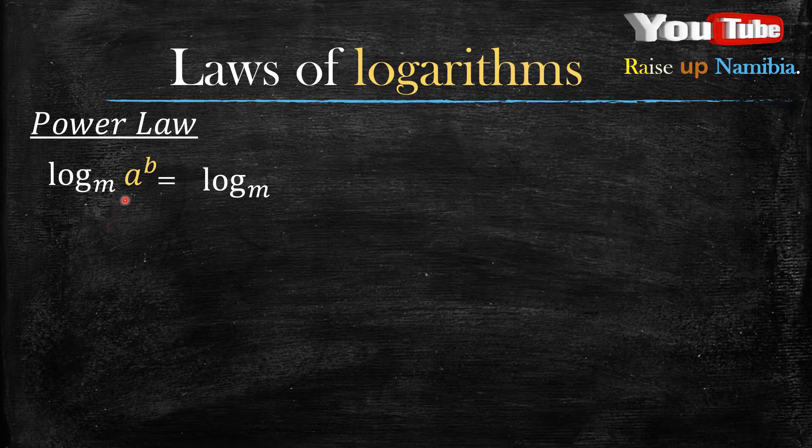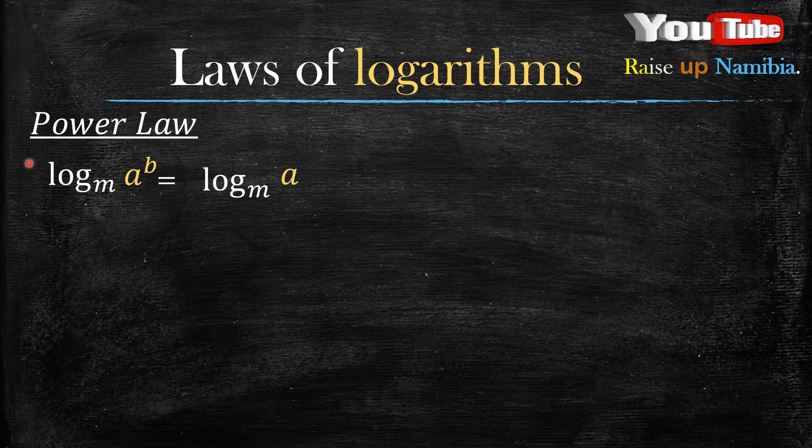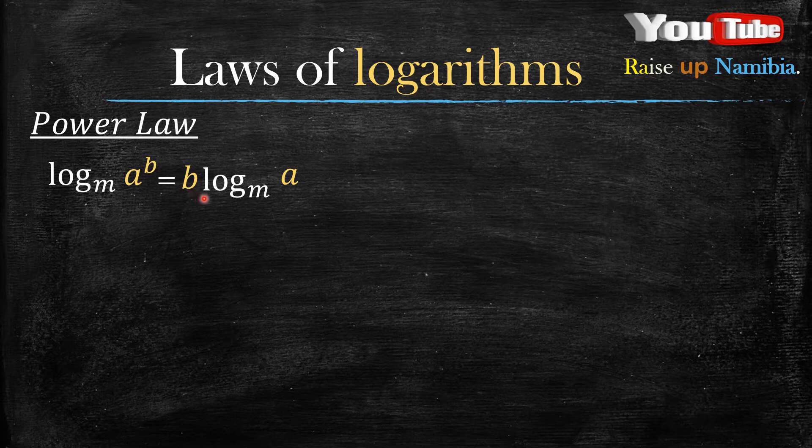Whatever number you have at A, you also rewrite it just the same way next to the log base M. What changes is the exponent, which means this B—you take it to the front of your log. If you took this B in front of the log, it will be B multiplied by log base M of A.